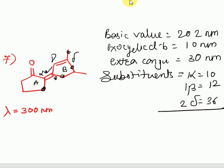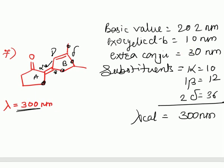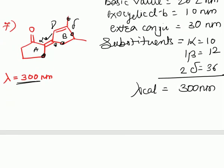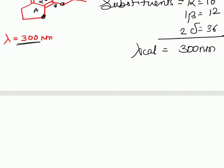Now we have calculated the maximum wavelength for the enone system. In the next lecture, we will see the theoretical terms related to ultraviolet and visible spectroscopy and the nature of the questions asked on the same topic.